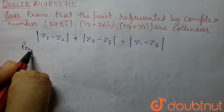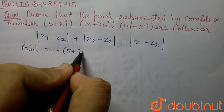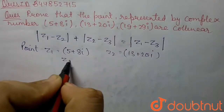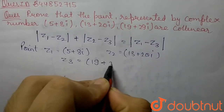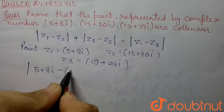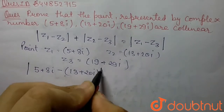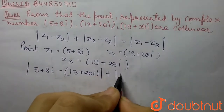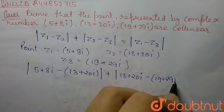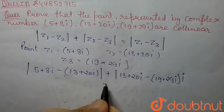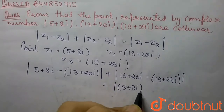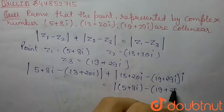Here the points given in the question: z1 = 5+8i, z2 = 13+20i, and z3 = 19+29i. We substitute the values: |5+8i - (13+20i)| + |13+20i - (19+29i)| = |5+8i - (19+29i)|.